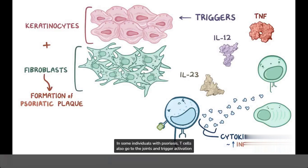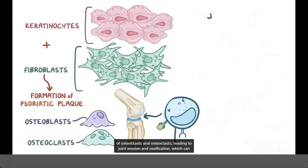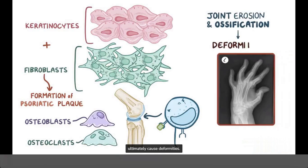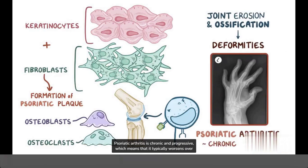In some individuals with psoriasis, T cells also go to the joints and trigger activation of osteoblasts and osteoclasts, leading to joint erosion and ossification, which can ultimately cause deformities. Psoriatic arthritis is chronic and progressive, which means that it typically worsens over time.